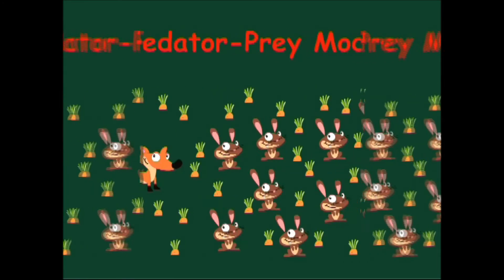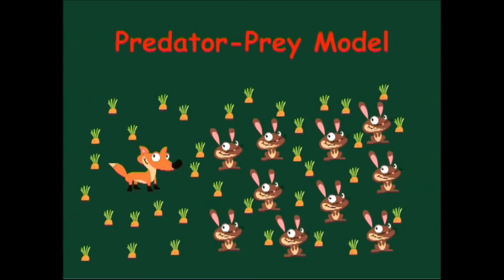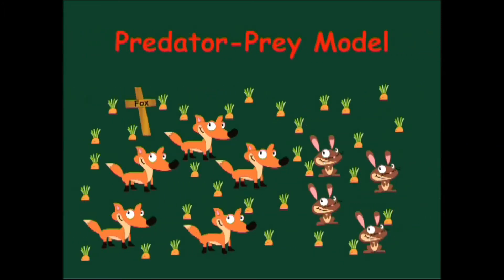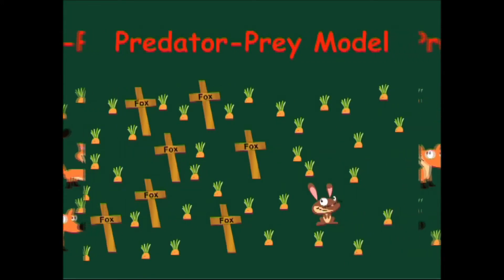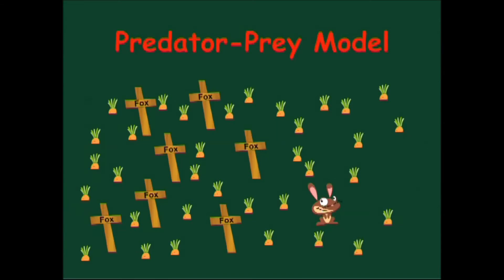This brings the foxes into the arena because they love to eat rabbits. The number of foxes starts to grow, whereas the rabbit population diminishes. Eventually, the ragged foxes have eaten nearly all of the rabbits. Famine sets in and the foxes die, bringing us back to the first step.